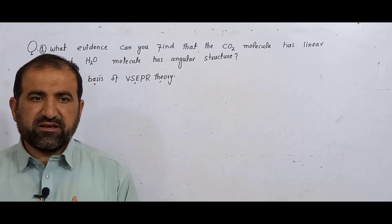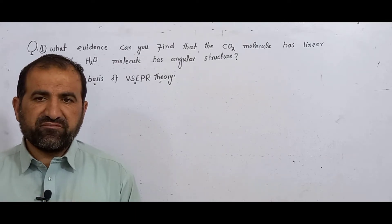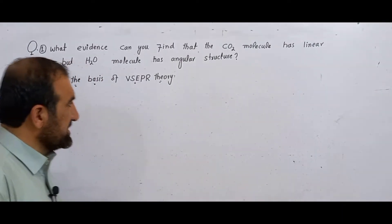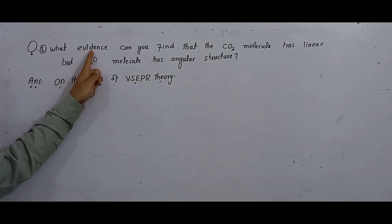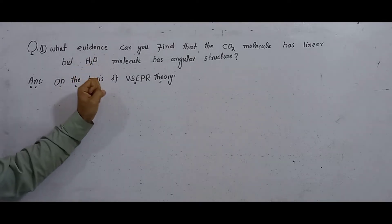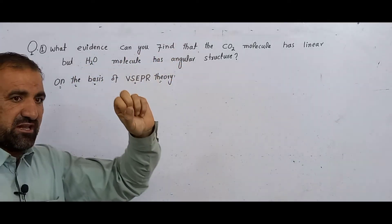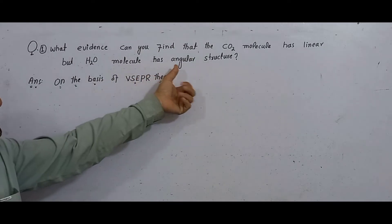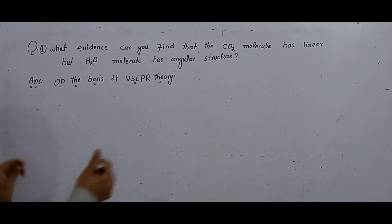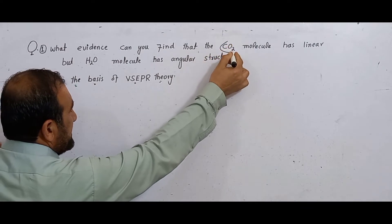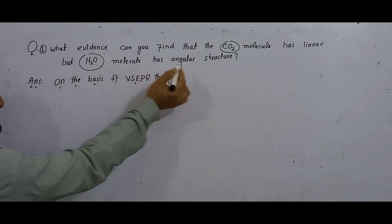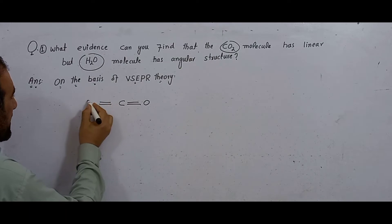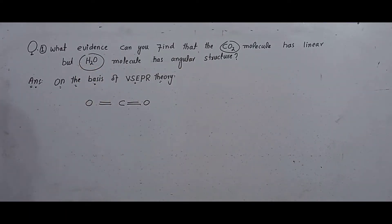First year chemistry, chapter number 3, short question number 1. What evidence can you find that the carbon dioxide molecule has a linear shape and the water molecule has an angular shape? Carbon dioxide is a triatomic molecule. The carbon dioxide shape is linear, and the water shape is angular or V-shape.